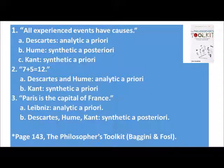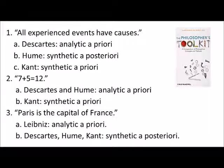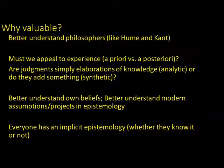You can see my videos on Kant or mathematical realism for more on this. In the Philosopher's Toolkit, Baggini and Fossl give a chart of controversies. For the claim 'all experienced events have causes': Descartes thought it was analytic a priori, Hume thought it was synthetic a posteriori, and Kant thought it was synthetic a priori. For '7+5=12': Descartes and Hume thought it was analytic a priori, whereas Kant thought it was synthetic a priori. So it's controversial where to draw the line, and understanding these points will help you better understand these philosophers and evaluate modern epistemological claims.